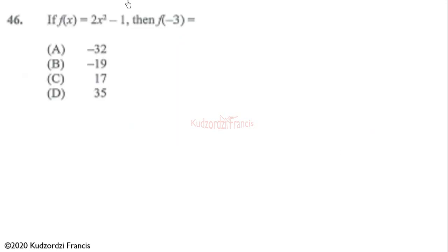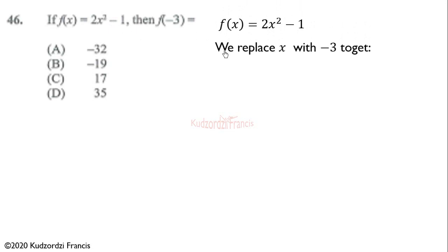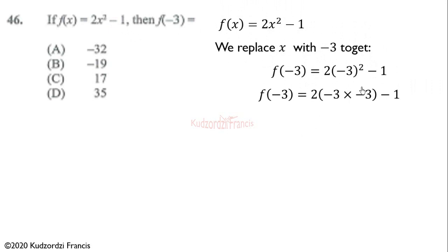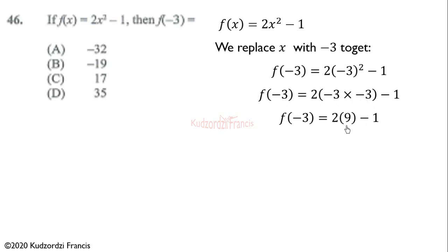Question 46: if f(x) = 2x² − 1, find f(−3). We substitute x = −3: f(−3) = 2 times (−3)², and (−3)² = (−3) × (−3) = 9, so 2 × 9 = 18, and 18 − 1 = 17. Therefore the correct answer is C.